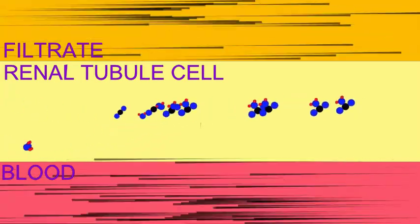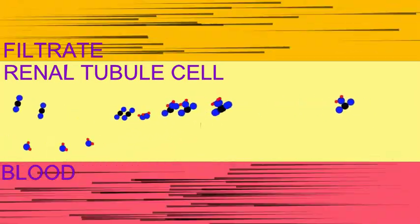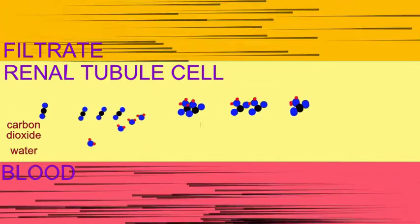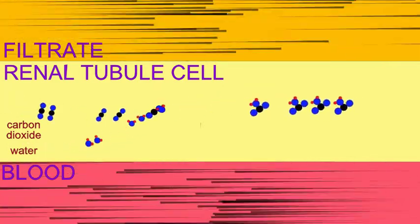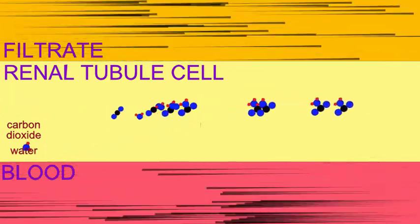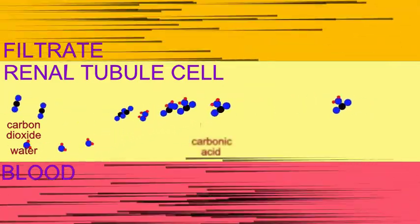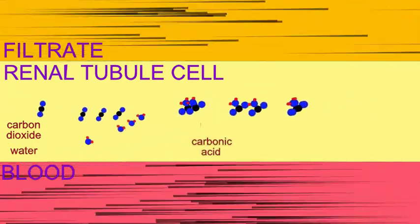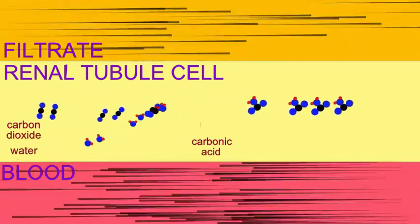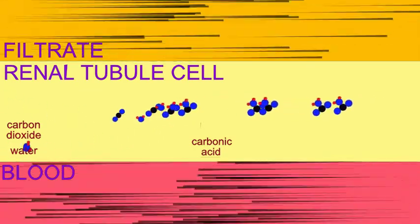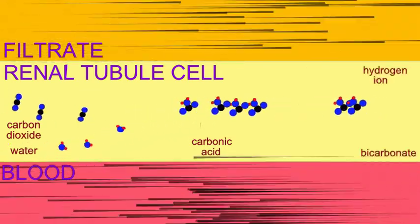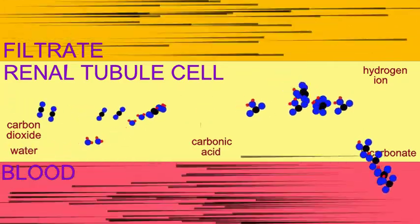Cells lining the renal tubule can convert carbon dioxide and water into carbonic acid. This carbonic acid dissociates to form bicarbonate and hydrogen ions.